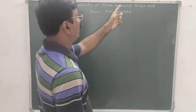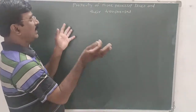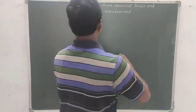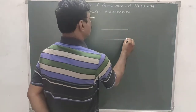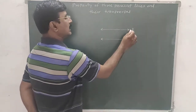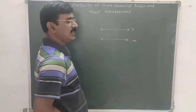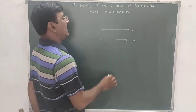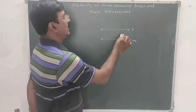The property of three parallel lines and their transversal. What are parallel lines? Suppose this line is L and this line is M. If lines lie in the same plane but do not intersect each other, then the lines are called parallel lines.